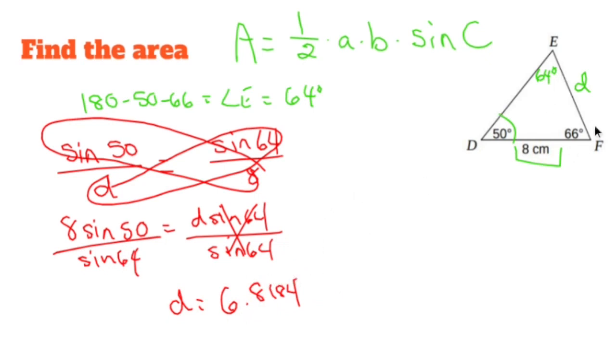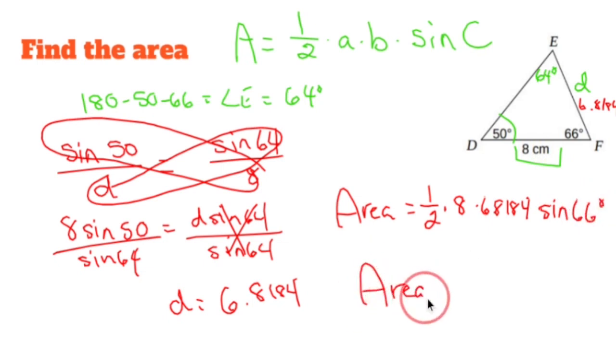So now that I have this guy right here, 6.8184, I can use my area formula, which says half times two sides and the sine of the angle in between. So half times 8 times 6.8184 times sine of 66 degrees. When I throw all of that into a calculator, I get 24.9157 centimeters squared because it's area. There you have it.